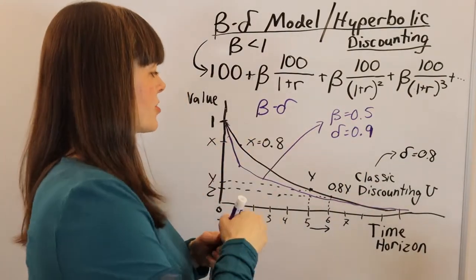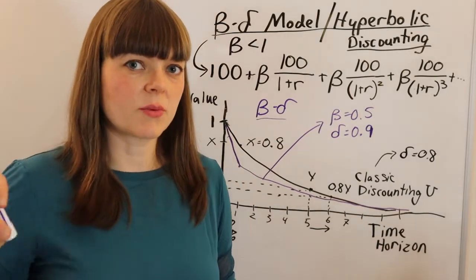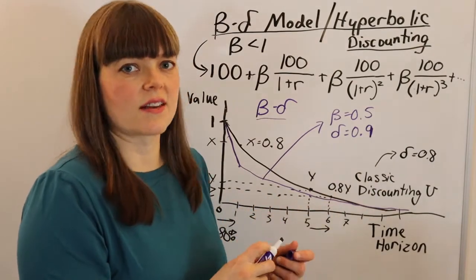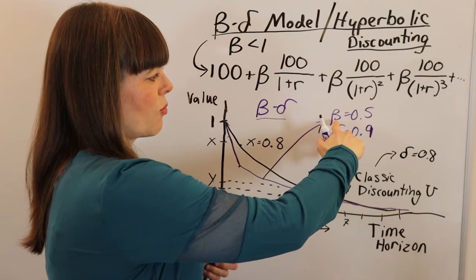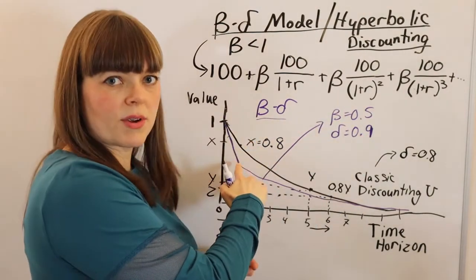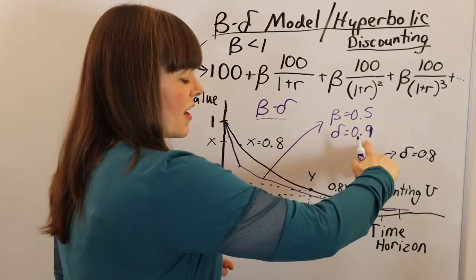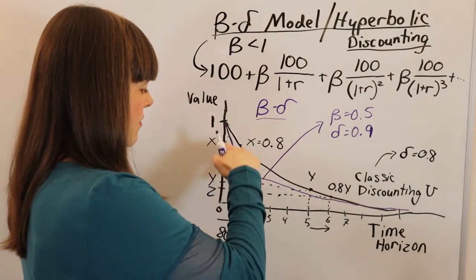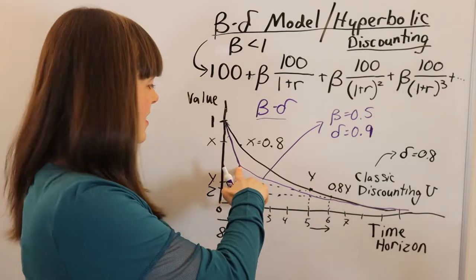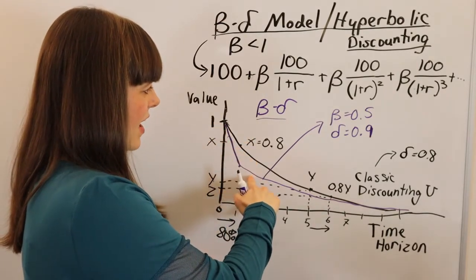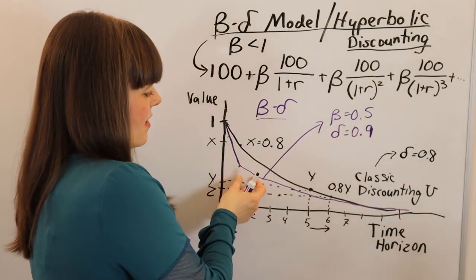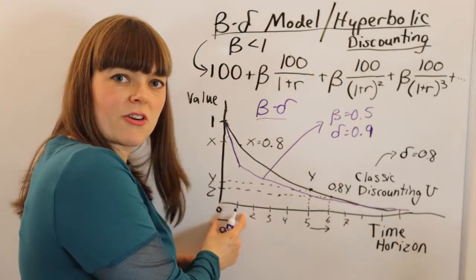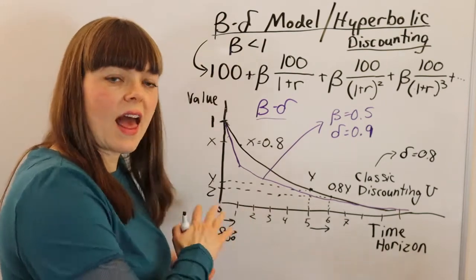Now in the purple, I've drawn the beta-delta version of this model. We not only have delta, we need a beta too. In my previous example, delta equals 0.8 was true of any two consecutive periods. Now beta is going to represent the decline between period 0 and period 1, and then delta is the steady decline per period every period after that. Between period 0 and 1, we're at 50% of the value of period 0. But then after that, it's going to be declining by 0.9 per period. This is time inconsistent because the drop between period 0 and 1 is different than every single other period.